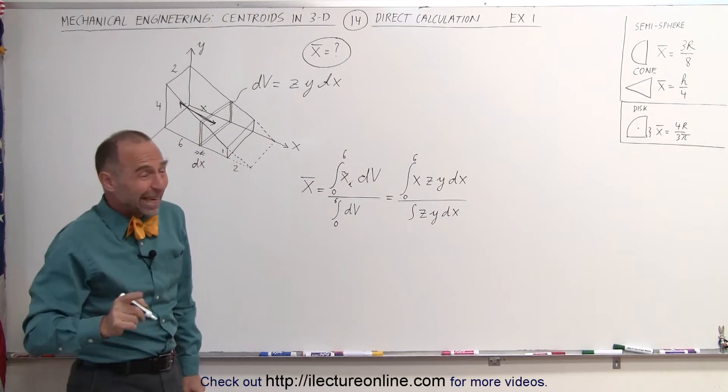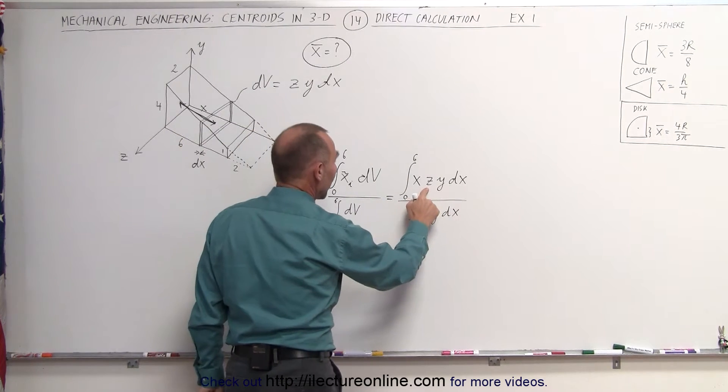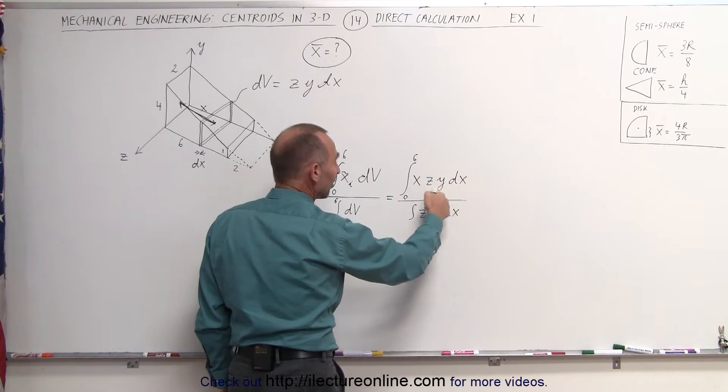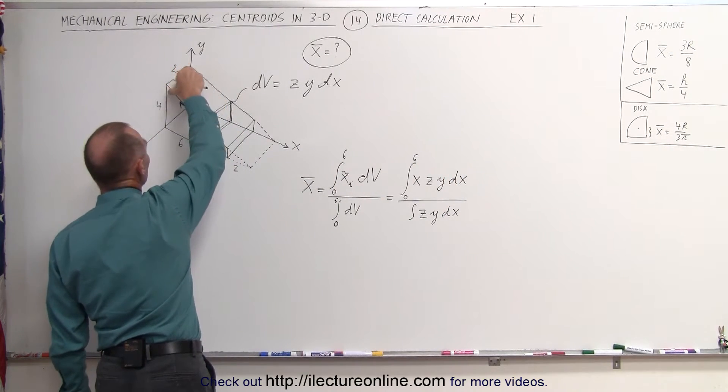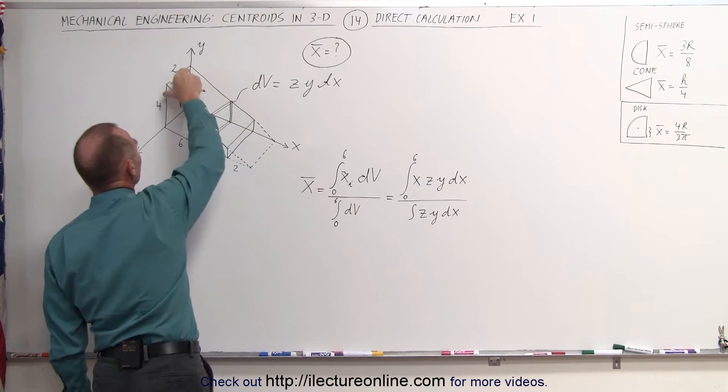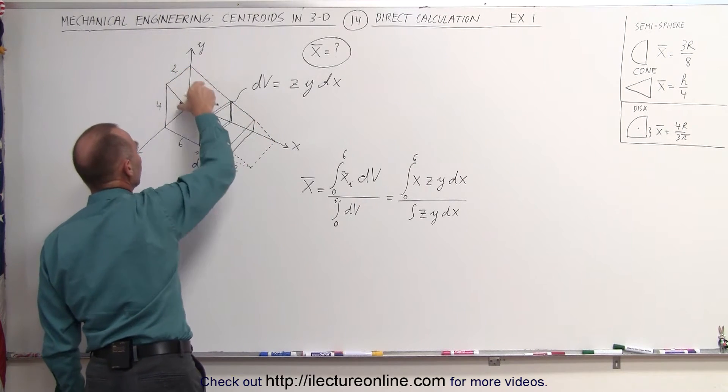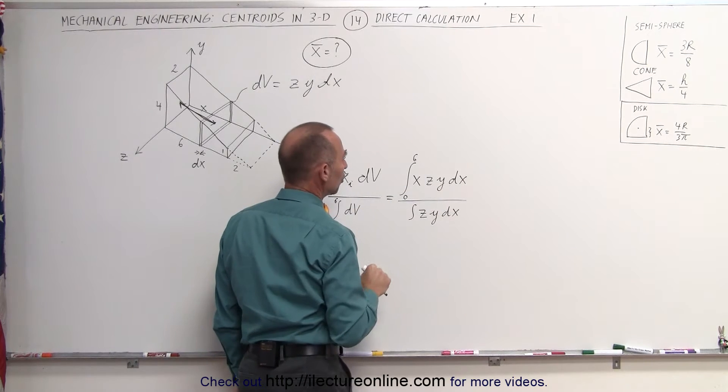Now obviously we can't integrate x times z times y times dx. We have to have the same variables dx. But first of all, we can see here that z never changes. z is equal to a constant. The whole wedge is equal to 2 units wide, so z can be replaced by a 2.